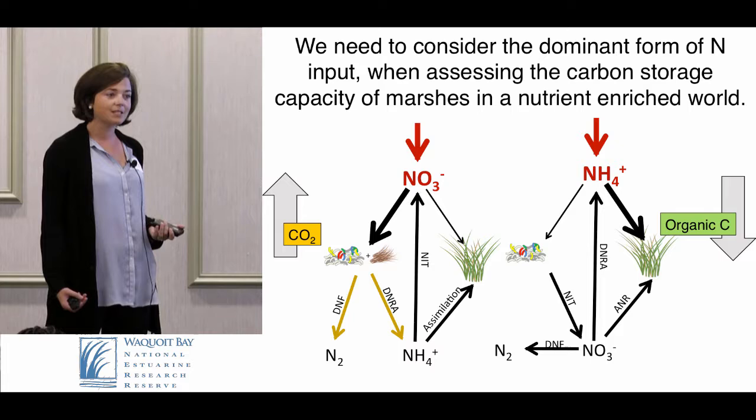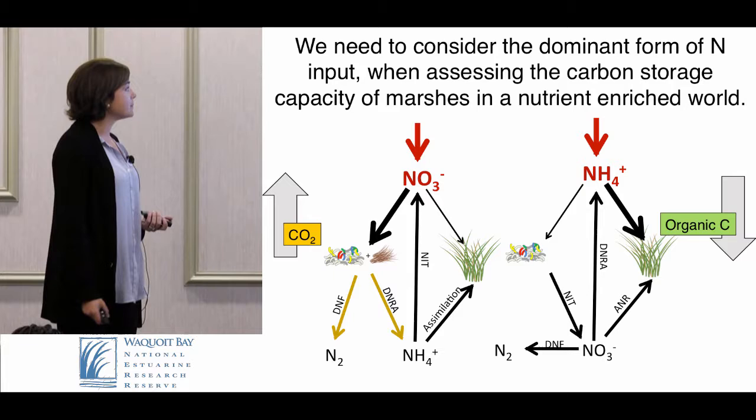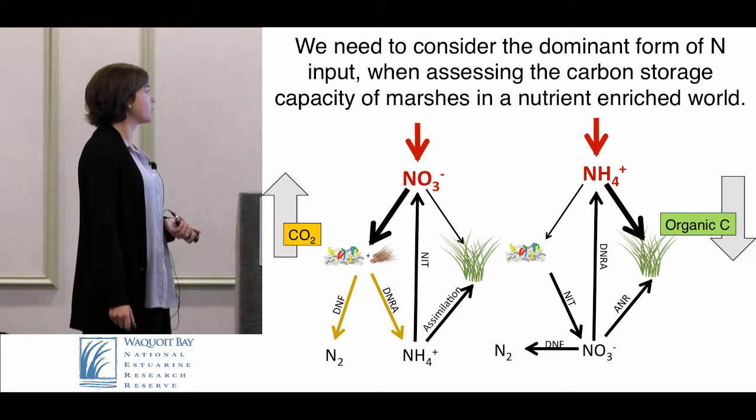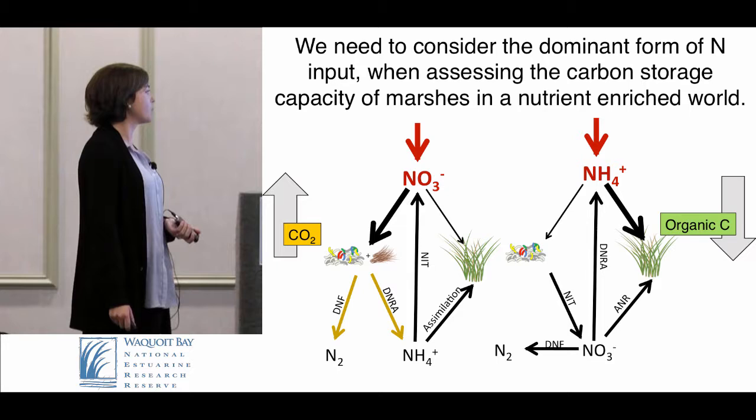The take-home message is that we need to consider not just the amount of nitrogen being added to salt marshes, but also the form of that nitrogen — whether it's nitrate or ammonium — when assessing the carbon storage capacity of these marshes in a more nutrient-enriched world. More nitrate can stimulate more decomposition because it acts as an electron acceptor, and it behaves differently from other nitrogen forms.